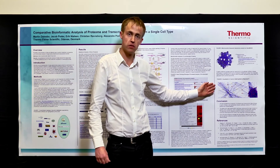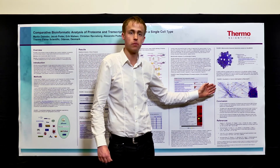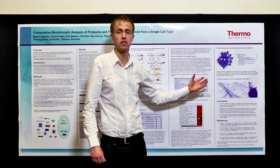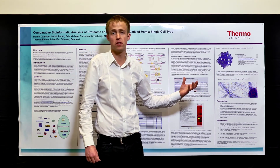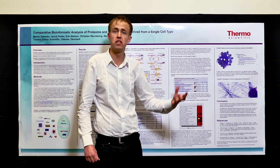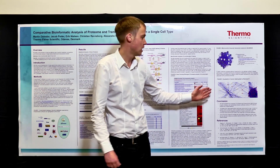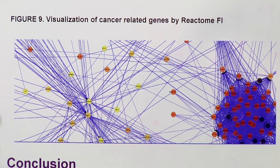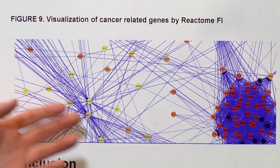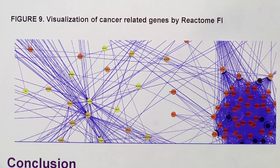The last figure on this poster displays a Cytoscape plugin that links pathway association to disease states. This is a cancer disease state where proteins closely associated with cancer are colored yellow and those that are not are colored red. This gives you an idea about the proteins you identified and their relative association to a disease state.